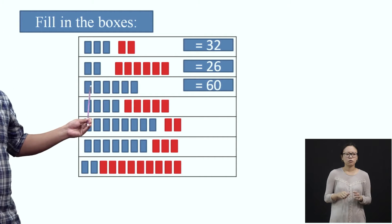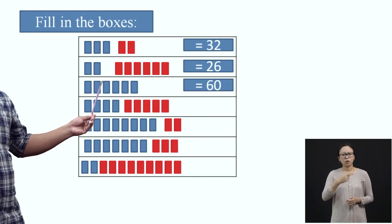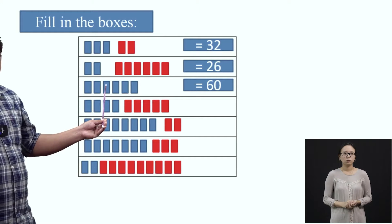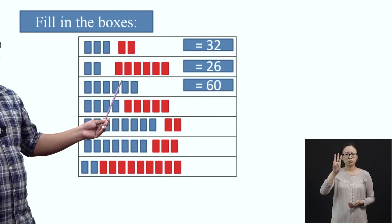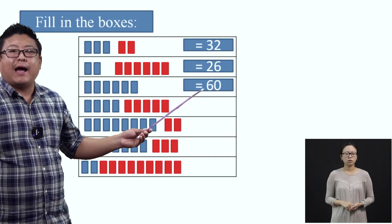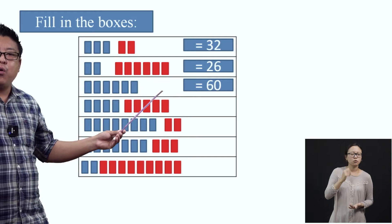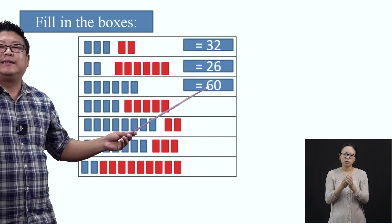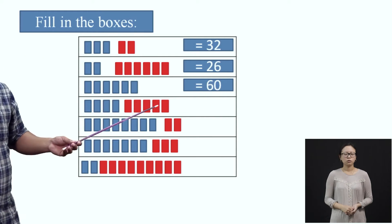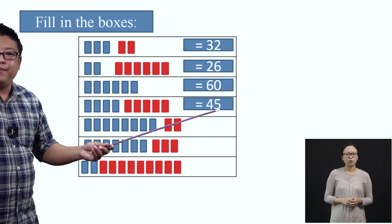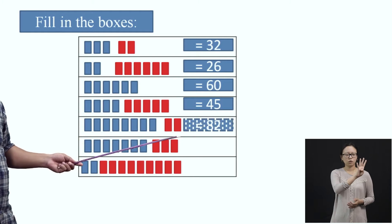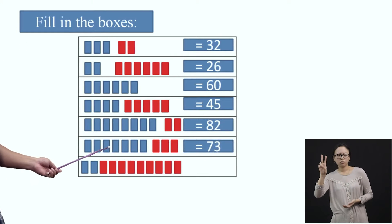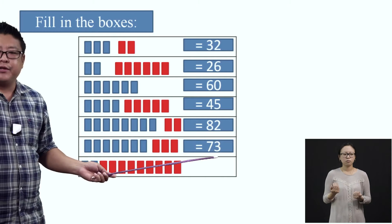Similarly, here we can see only blue strips and no red strips. Let's count the blue strips: one, two, three, four, five, and six. So, we have six blue strips and zero ones. Together, this will be called as sixty. In the same way, we will solve this as forty-five. The next row, when we solve, you will find that it is eighty-two — you can try this at home. The next one is equal to seventy-three.